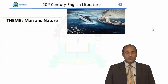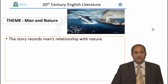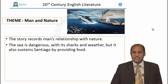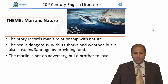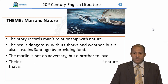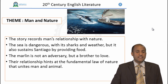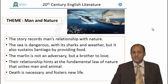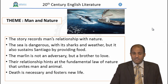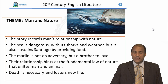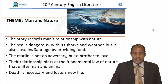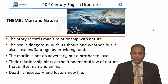The next theme is Man and Nature. The story records man's relationship with nature. The sea is dangerous with its sharks and weather, but it also sustains Santiago by providing food. The marlin is not an adversary but a brother to love, and their relationship hints at the fundamental law of nature that unites man and animal. Death is necessary and fosters new life: Santiago must kill the marlin to live, and the shark must eat the marlin to live — life comes out of death.